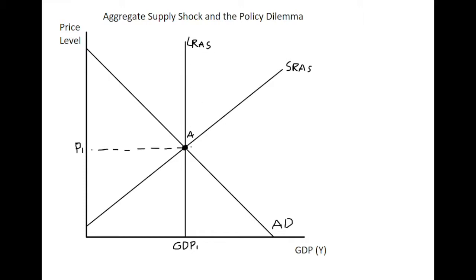We have a model here with long-run aggregate supply and short-run supply and demand in equilibrium — a given price level and GDP. When we look at an aggregate supply side shock, this can come from things such as an increase in the wage rate, an increase in oil prices, or something like that, which causes the short-run aggregate supply curve to shift to the left — an adverse shock.